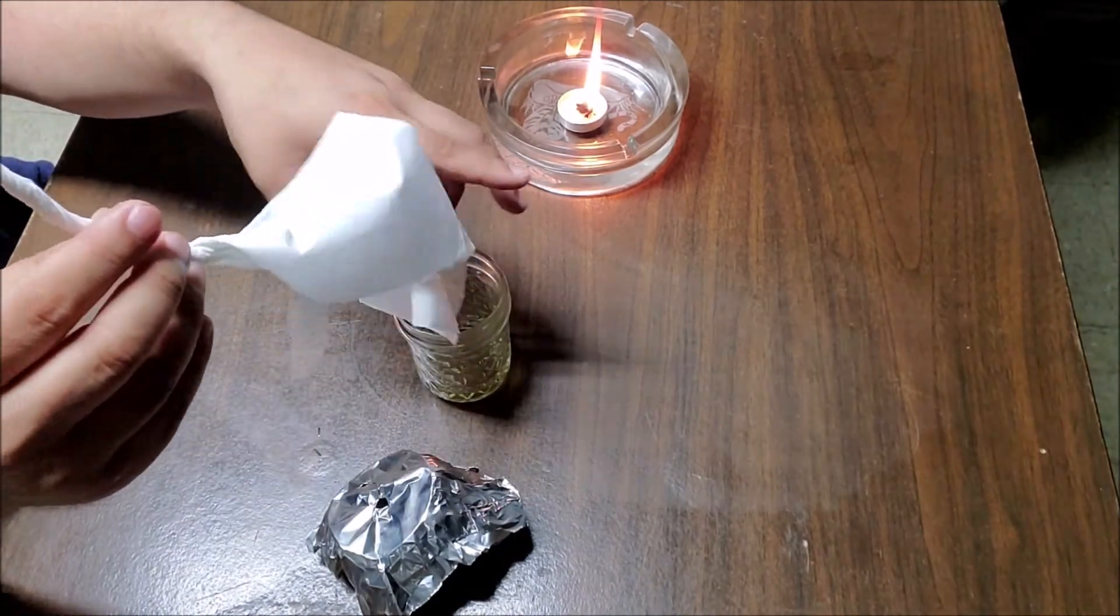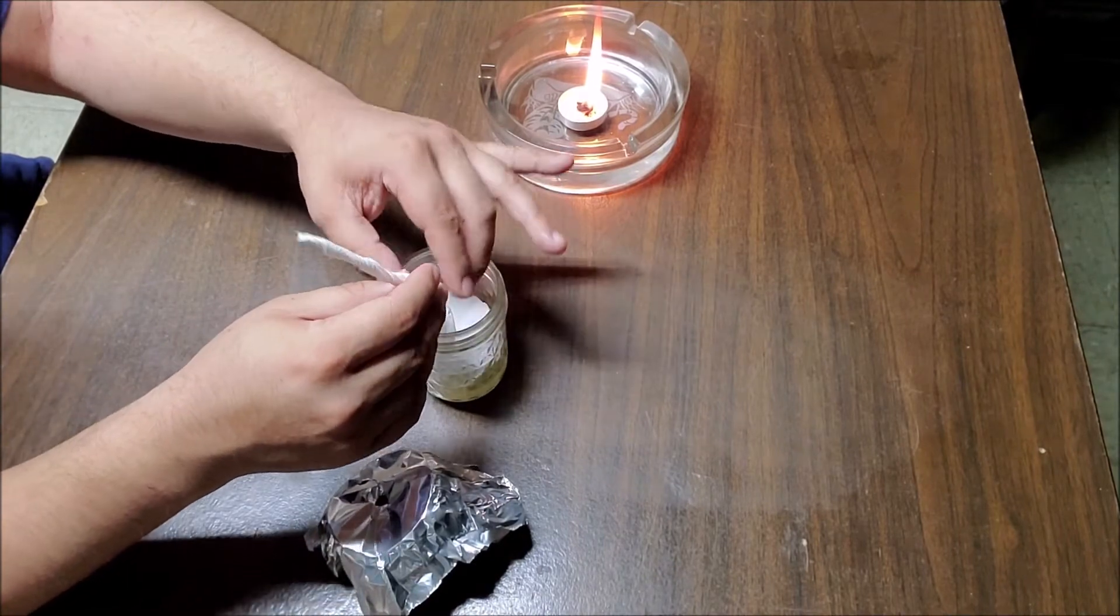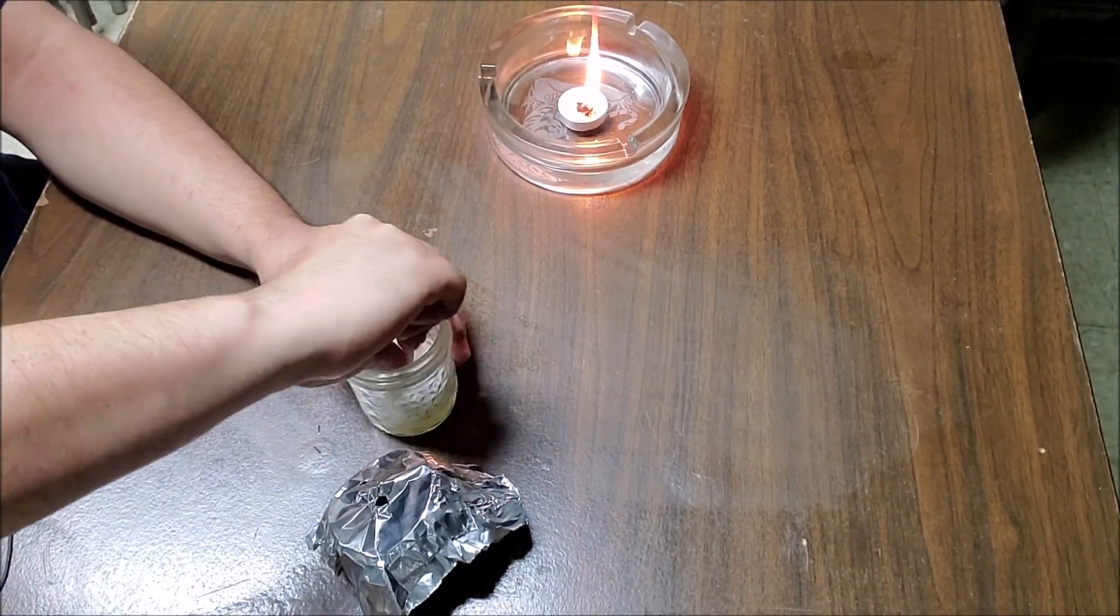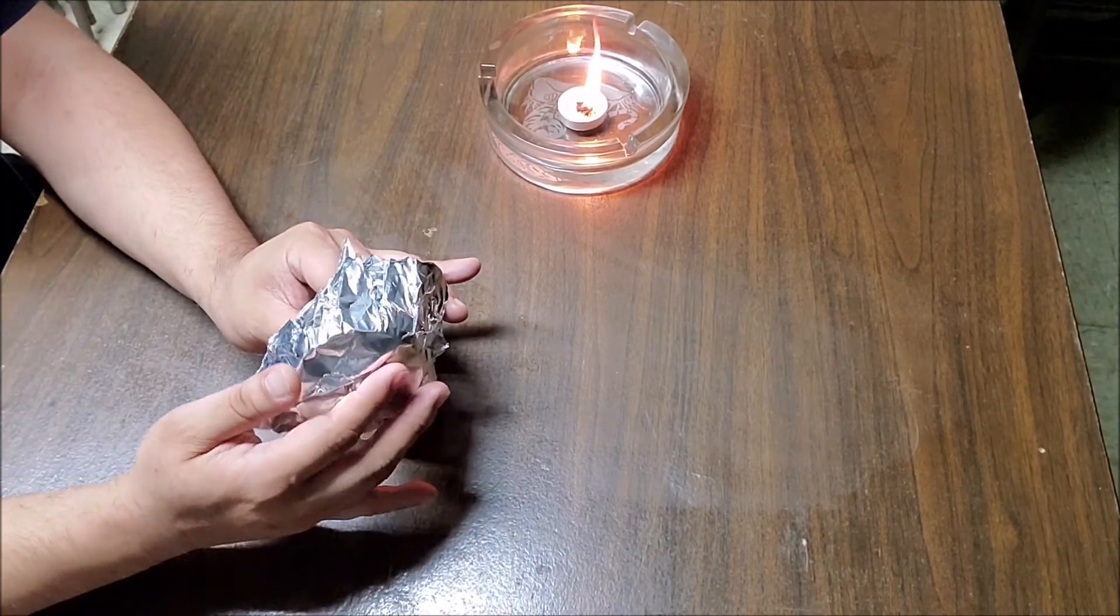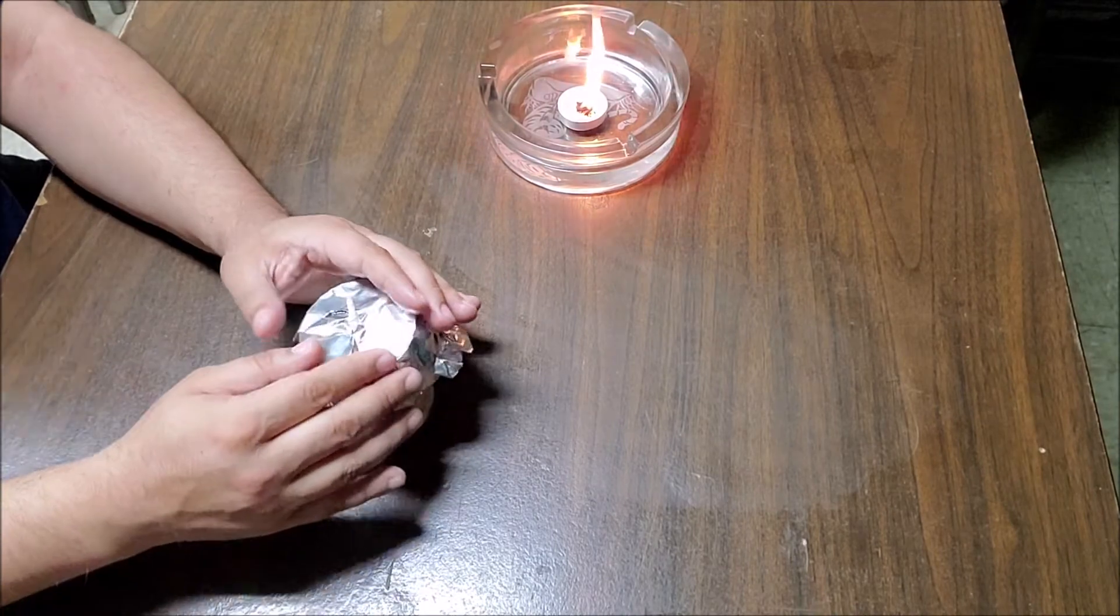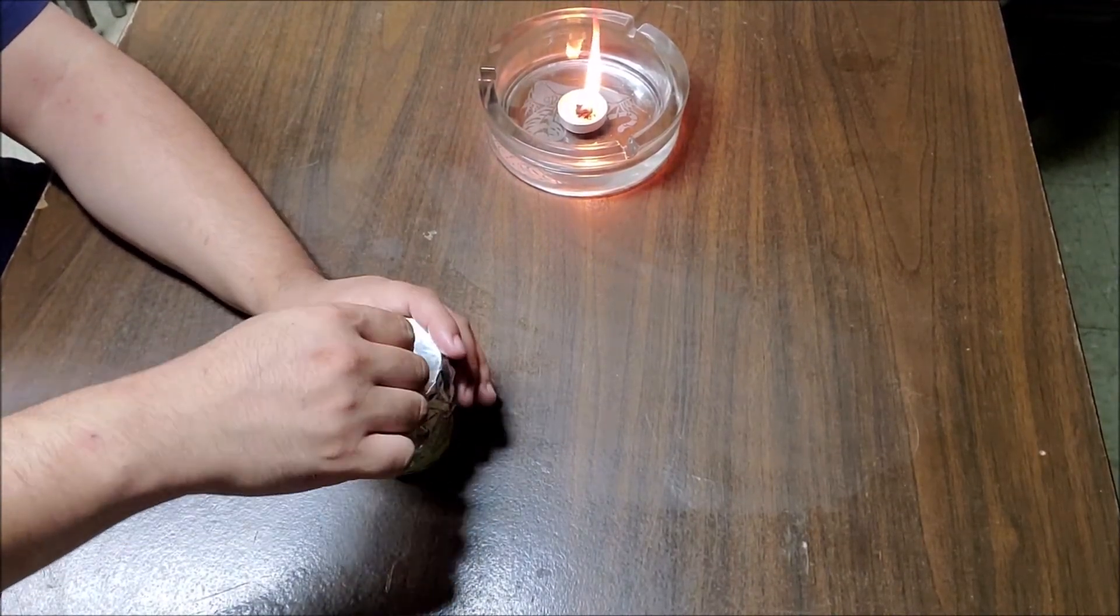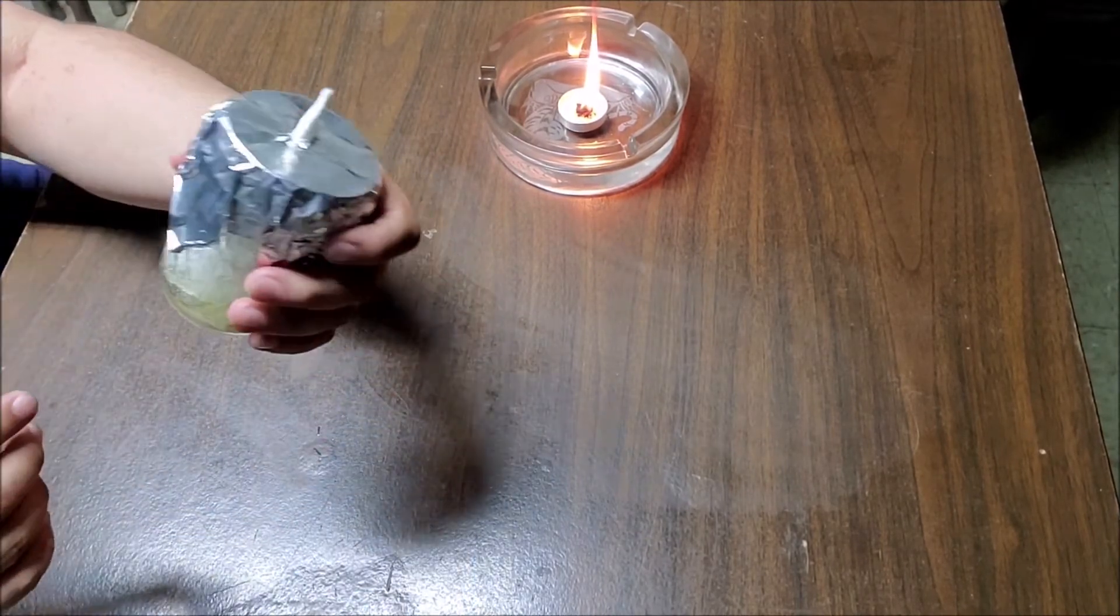So what you do is you push the rest of the part in so it will soak up the oil pretty well. And this center part, you want to put it in like so. You want to make a wick like so.